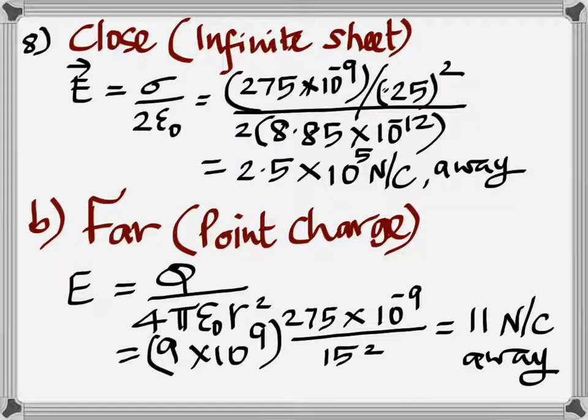The eighth one, when you are very close to an infinite sheet of charge, as just proved, intensity is sigma by 2 epsilon. And because it's a positive charge, the intensity points away from the sheet. But when you try to find the intensity at a point that is very far away, all the charges on the sheet act like a point charge. And therefore, you just take the formula for intensity due to a point charge, which is Q by 4 pi epsilon naught R squared, and you get 11 newton per coulomb.